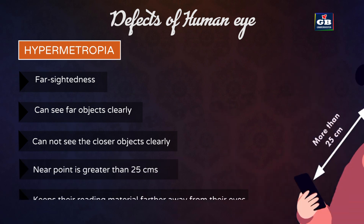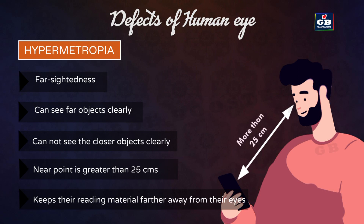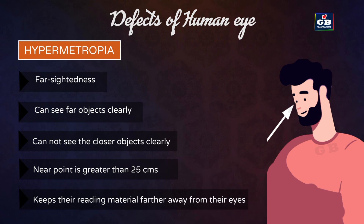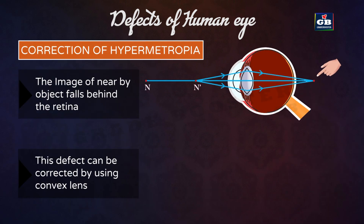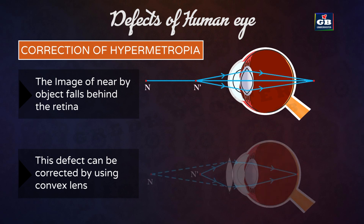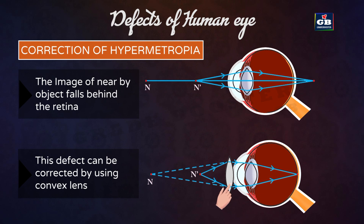The normal near point of the human eye is 25 centimeters, but for a hypermetropic person the near point is farther away than 25 centimeters. Hypermetropic persons keep their reading material much beyond 25 centimeters from the eye for comfortable reading, because light rays from a close object are focused at a point behind the retina.